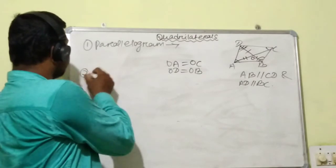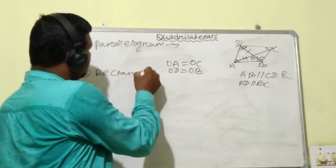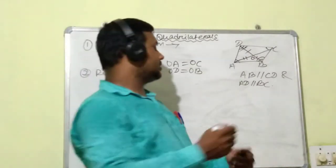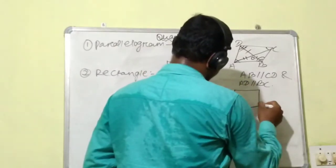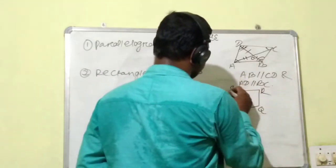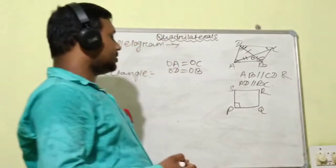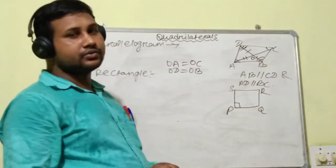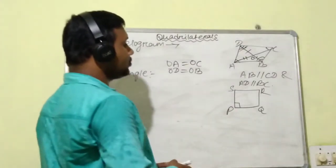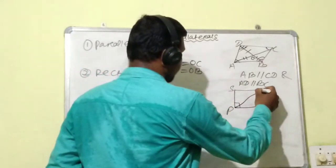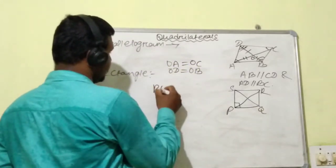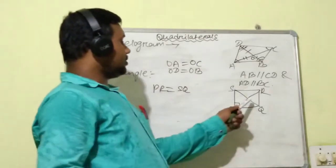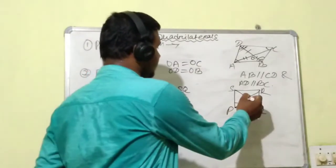Next, we will discuss about rectangle. What is a rectangle? The parallelogram in which each angle is 90 degrees is called a rectangle. Let PQRS be a rectangle where each angle is equal to 90 degrees. Opposite sides are equal and parallel to each other. The two diagonals PR and SQ are equal — that is PR equals SQ — and they also bisect each other at a point O.